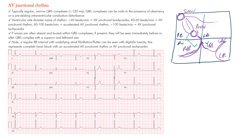AV junctional rhythms originate from the AV nodal region. For this to happen, something above must be going wrong — perhaps sinus node dysfunction or block — so the AV node takes over as a safety net. The intrinsic rate of the sinus node is 60–100 bpm; the AV junctional region is 40–60 bpm; and the ventricles are 20–40 bpm.